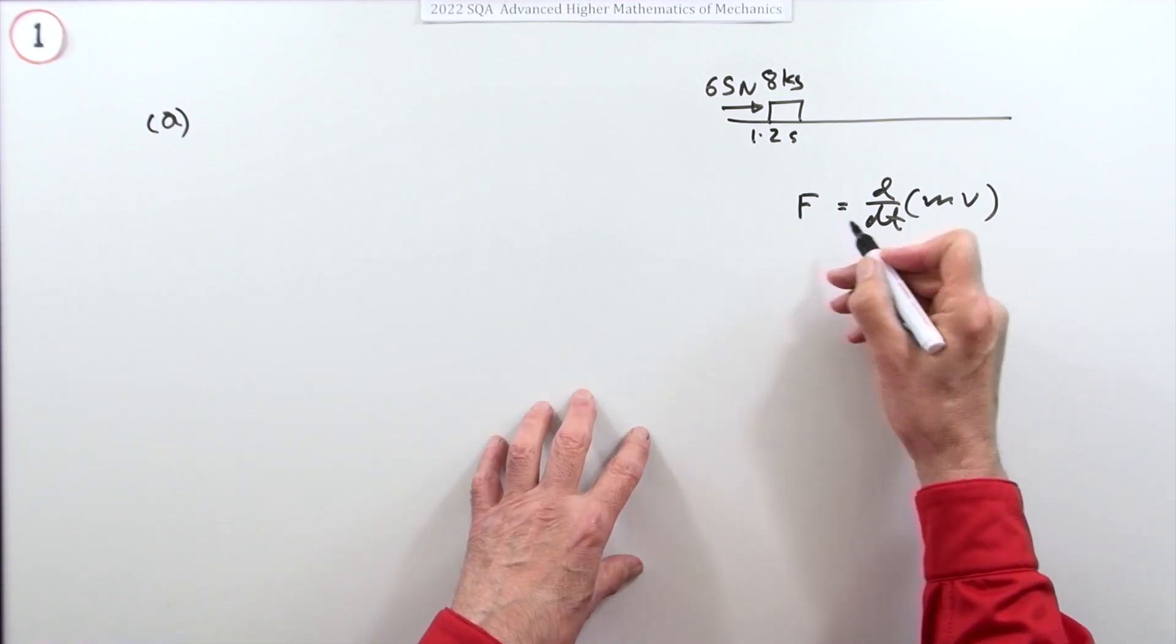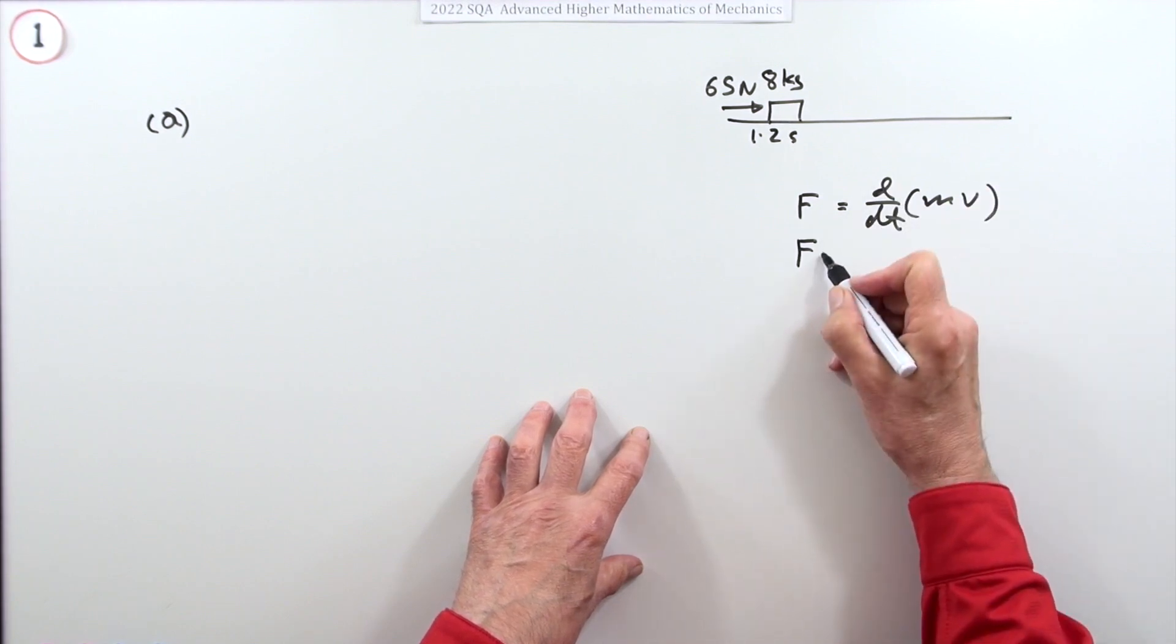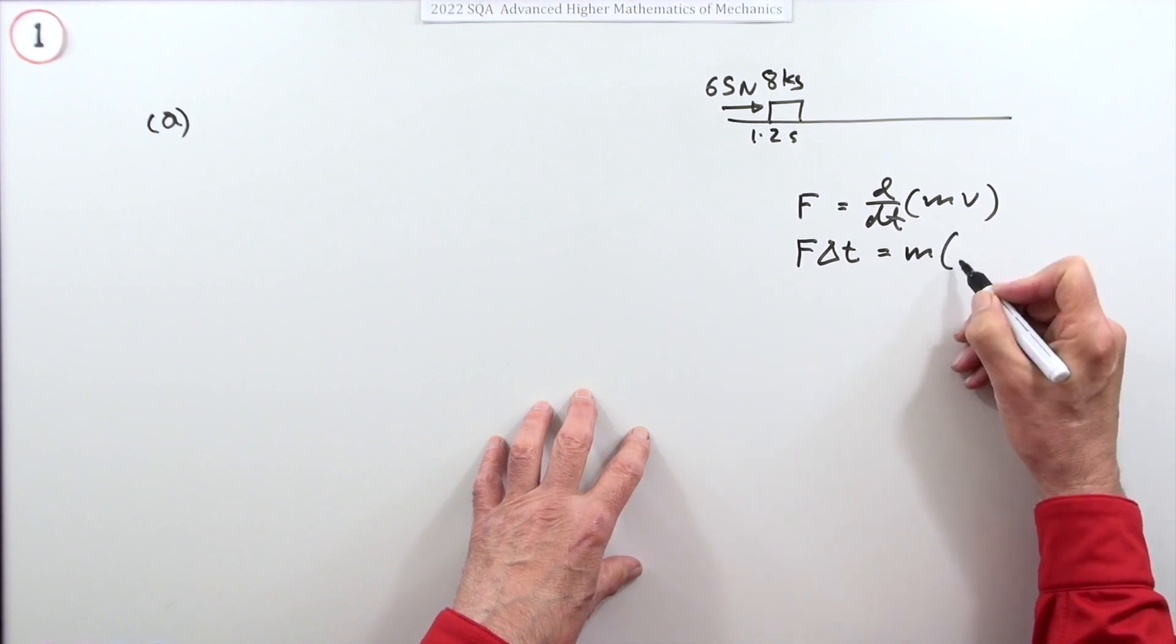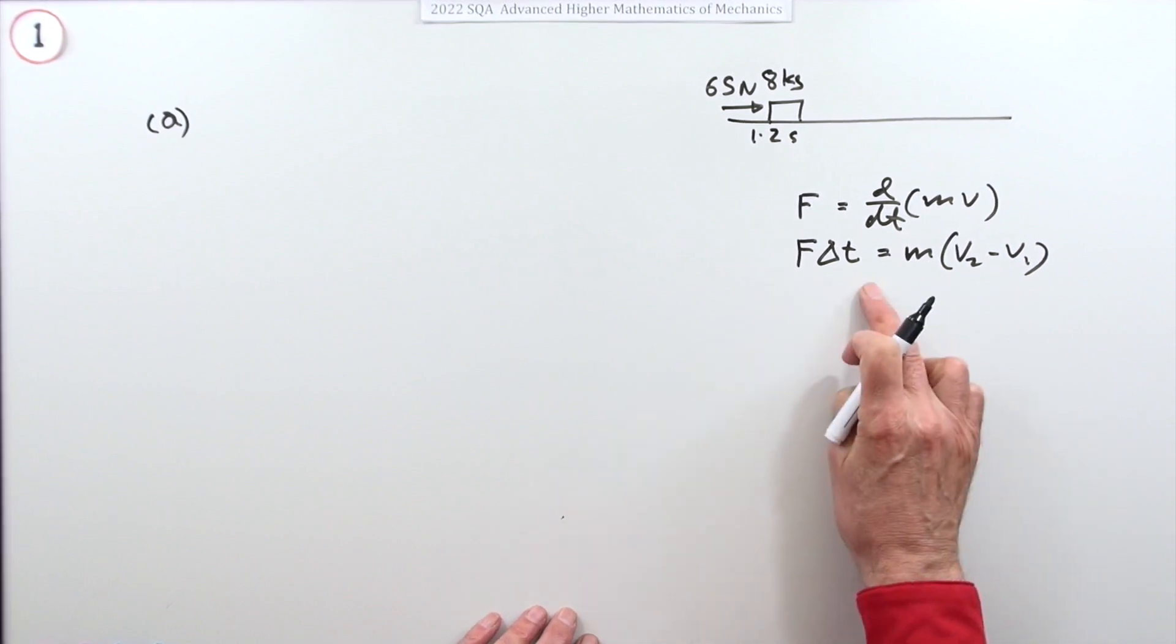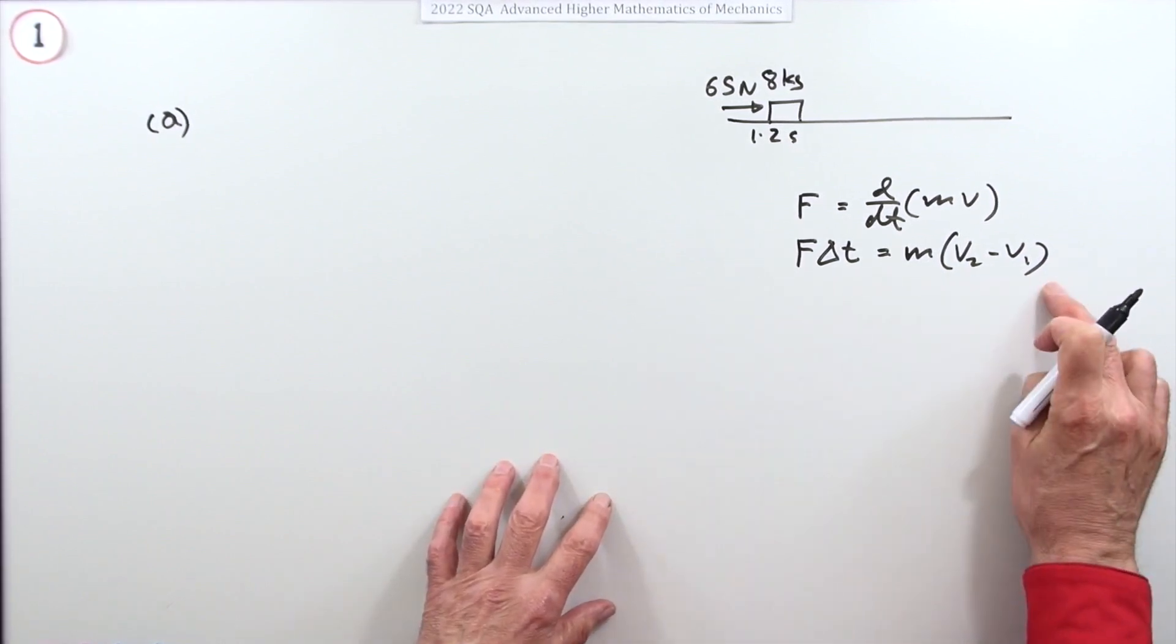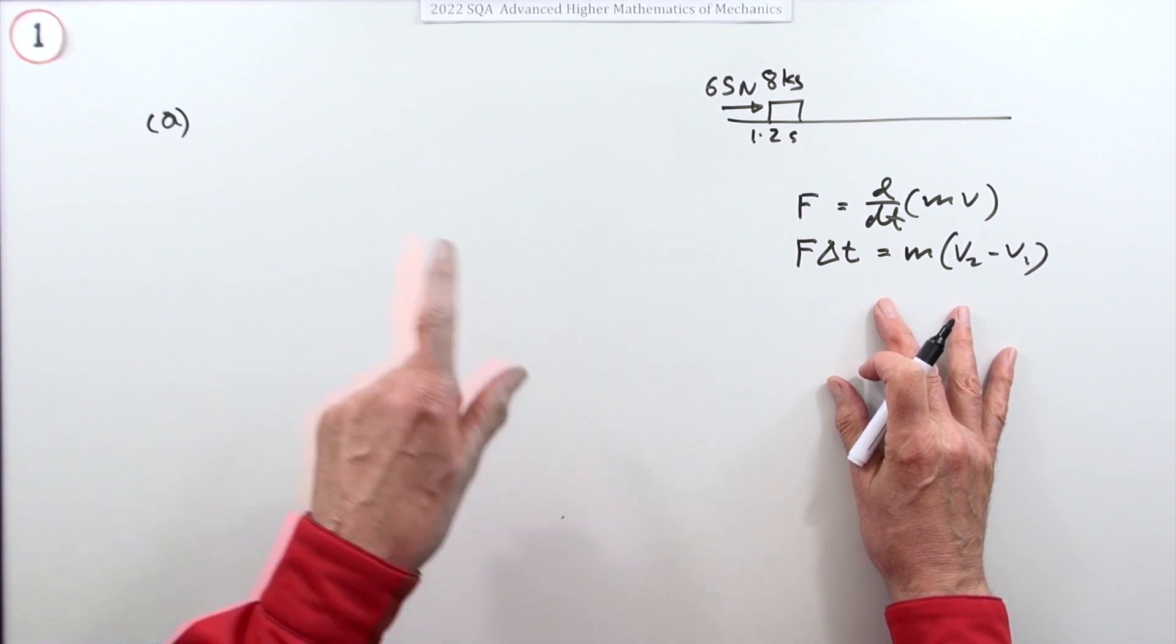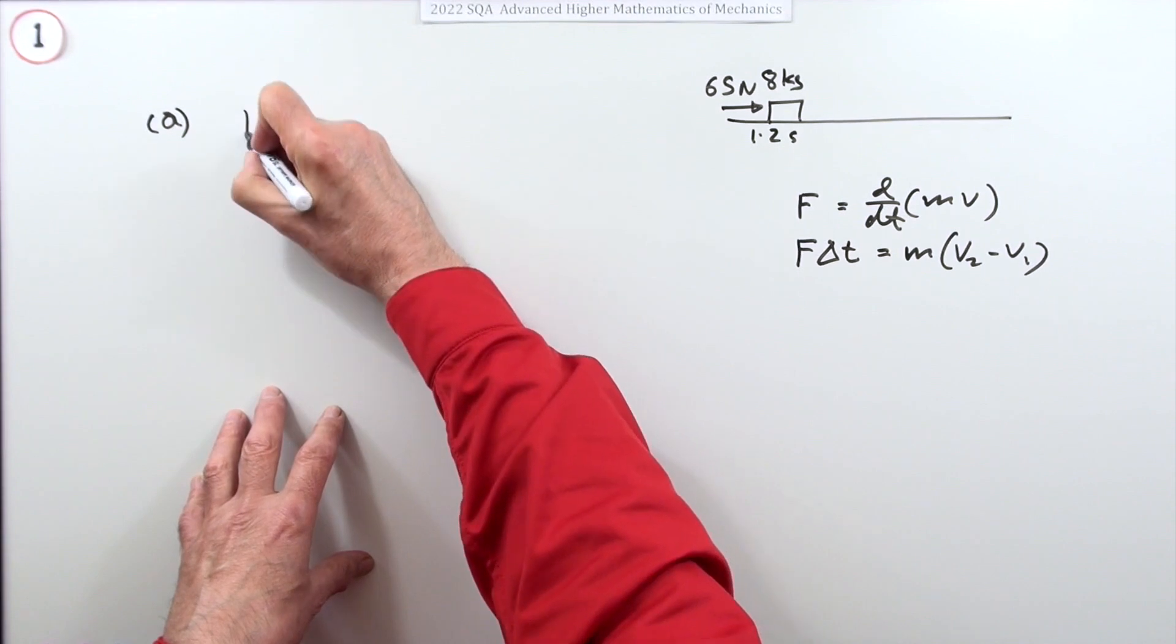Or you could do it the other way, take that across and use big changes instead of small changes. So F Δt and m is going to be constant, will be m Δv or v2 minus v1. Impulse equals the change in momentum. I'm just saying you could use that instead because part b asks about impulse.